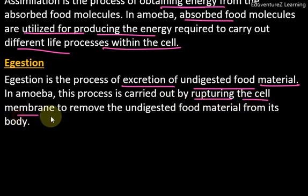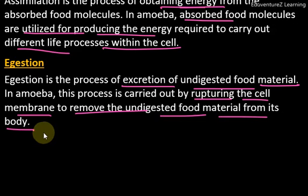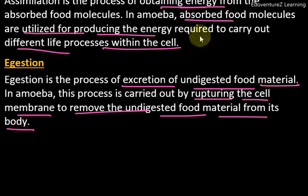Rupturing means to contract and then pull out. Amoeba first contracts its body very strongly, then expands with great force so that all the rough, undigested food material and other unnecessary substances are pushed out through the cell membrane — the self-membrane of amoeba. Thank you.